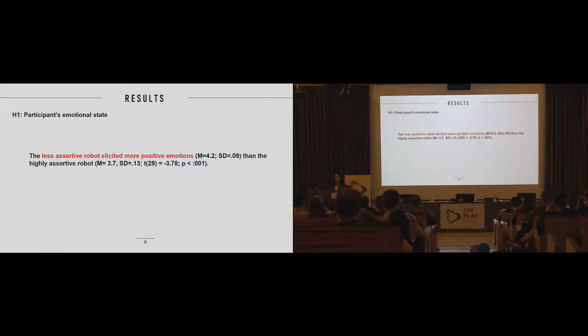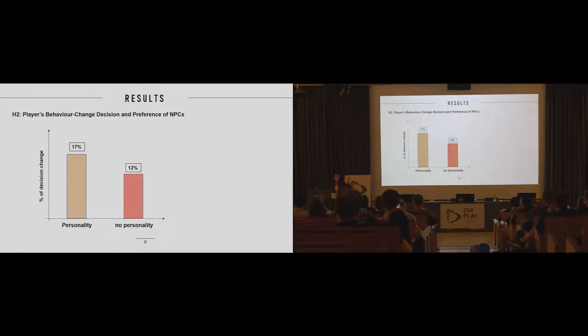We also found out that the less assertive robot elicited more positive emotions than the highly assertive robot. We didn't find any difference between different levels of assertiveness, high and low, but we did find a difference when comparing both assertive robots and the robot in the control condition which displayed a neutral combination of traits. We found out that in most of the cases where the robot did manage to convince the player to make a different decision in the game, the decision change was parallel to the user's personality.